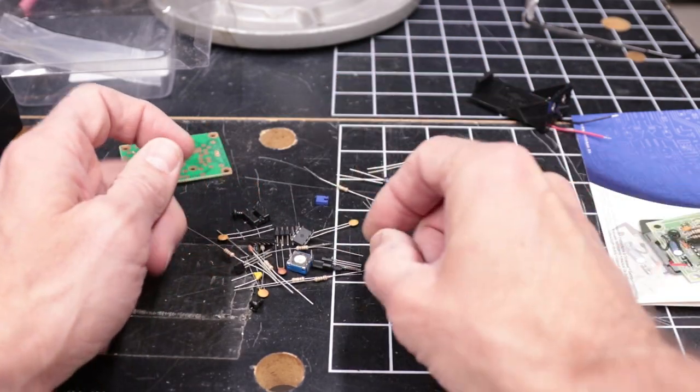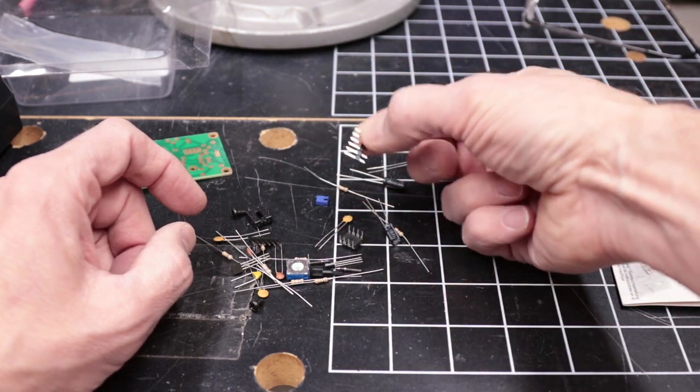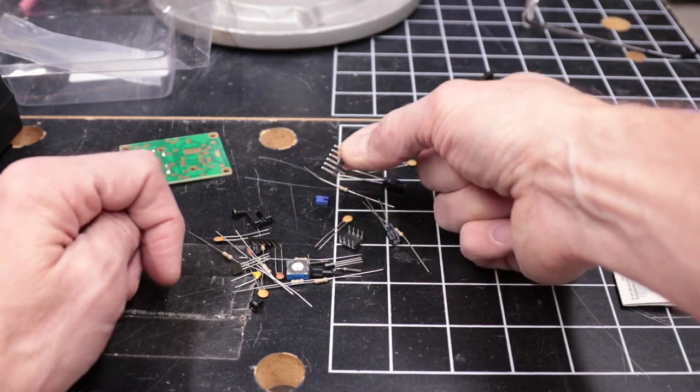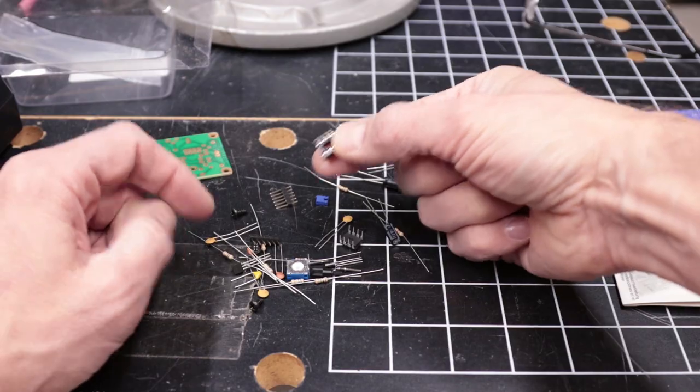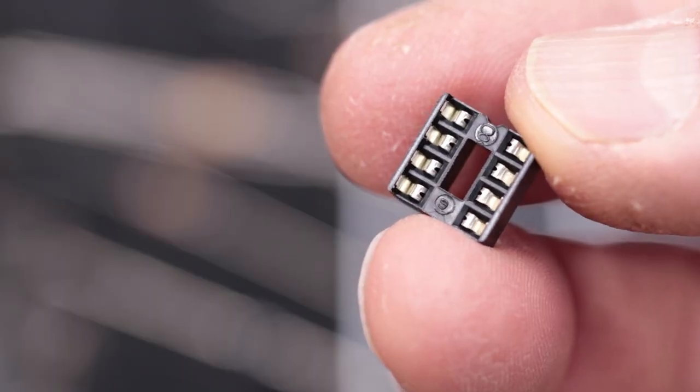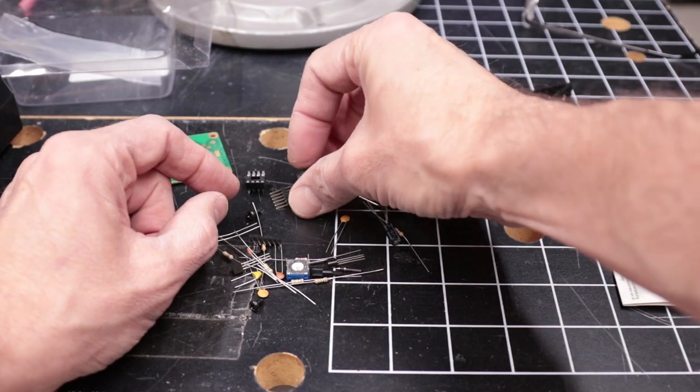This is a jumper. These are header connectors for the jumpers. This is a socket for the chip. And here's the chip itself.